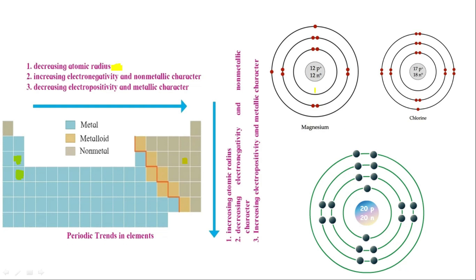So to summarize: as we go down a group, the metallic character increases because the distance from the nucleus increases and the effective nuclear force decreases. And going up a group, the non-metallic character increases. This is all about the theory. We have studied it, and the rest of the practical part we will do in class. I hope you have understood. If not, please reach out. Thank you very much — this chapter has been completed.